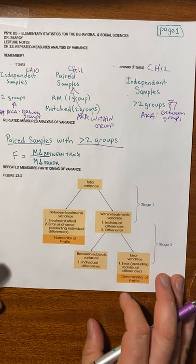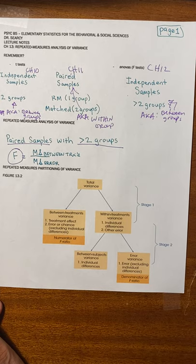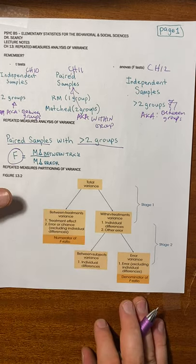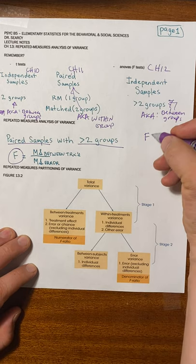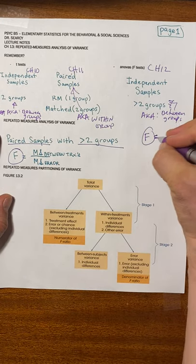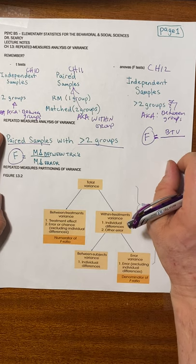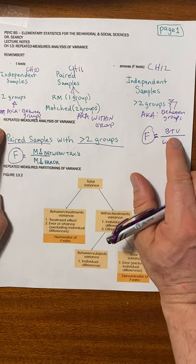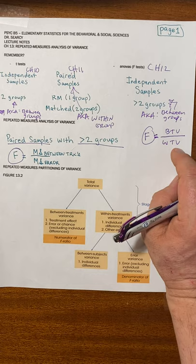In this analysis, the big thing we're solving for is F. The F equation this time is made up of mean squares between treatments over mean squares error. Let's go back and remember what F consisted of in the Chapter 12 ANOVA. The F in Chapter 12 had BTV — between treatments variance — in the numerator and WTV — within treatments variance — in the denominator.